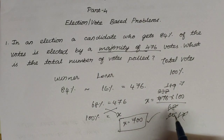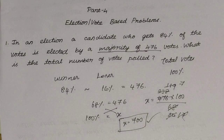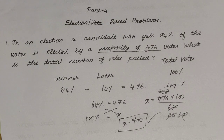The word 'majority of 476 votes' is very important. It means the difference between winner and loser votes — that is the meaning of the word majority.